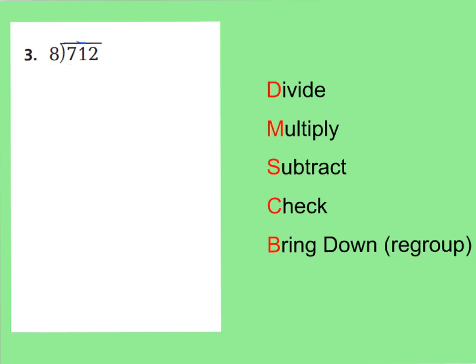I know that 8 times 8 is 64, but 8 times 9 is 72. I don't have enough for 8 times 9, so I'm going to put 8 up here. So 71 divided by 8, I would have 8 in each group — that's my divide step. Now let's multiply. I'm going to multiply what I just divided: 8 times 8 is 64.